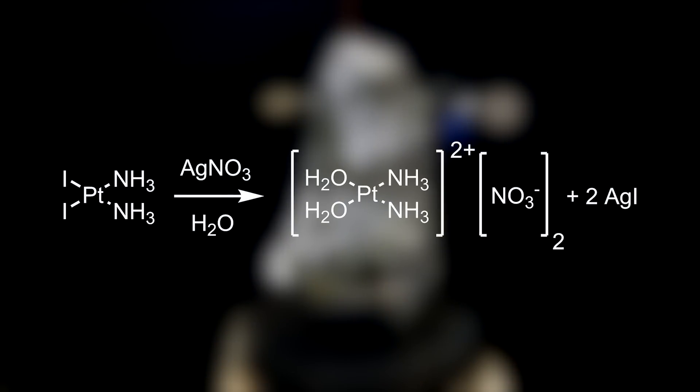In the reaction, silver nitrate oxidizes the platinum, ripping off the two iodines to form silver iodide. Two water molecules then coordinate to the platinum, forming a 2 plus complex, of which the remaining nitrate ions balance the charge.